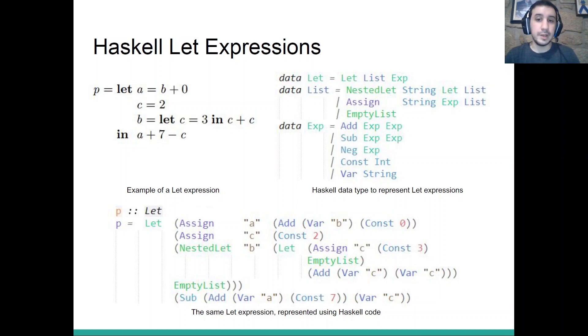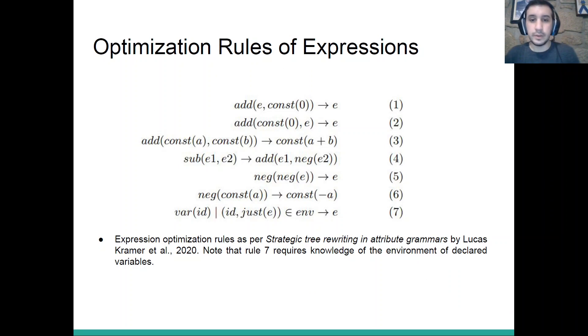We will want to change this type of lets. We will want to optimize expressions. In particular, for example, adding with zero, we want to replace that with the expression itself. These types of optimizations. And for that, we have seven optimization rules that we took from the paper Strategic Tree Rewriting and Attribute Grammars by Lucas Cramer. Here we have our seven rules. The first six are relatively simple. Stuff like adding e to zero returns e or adding zero to e also returns e. Adding constant a constant b returns constant a plus b.